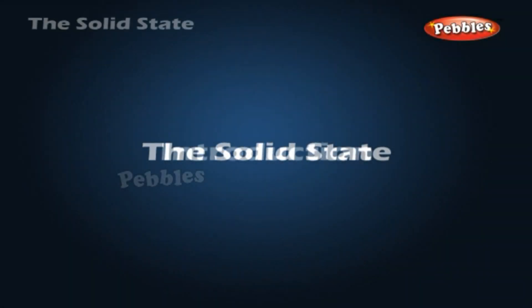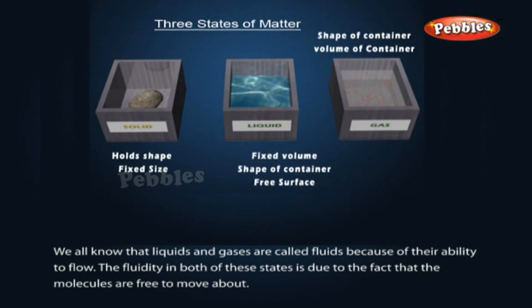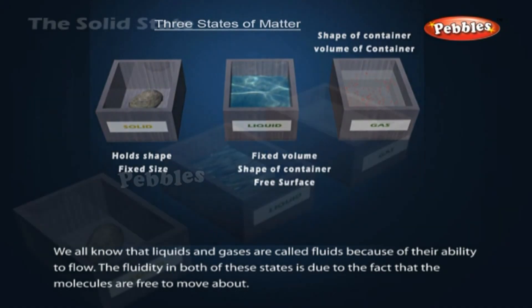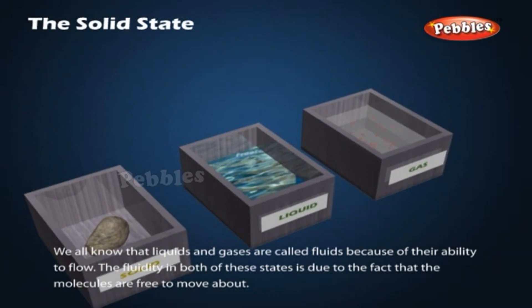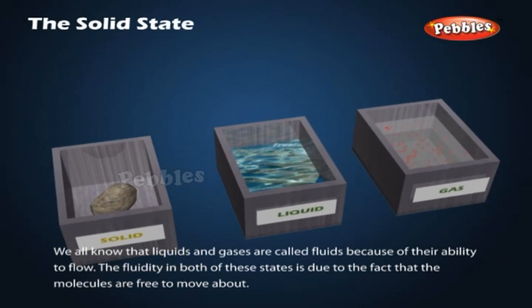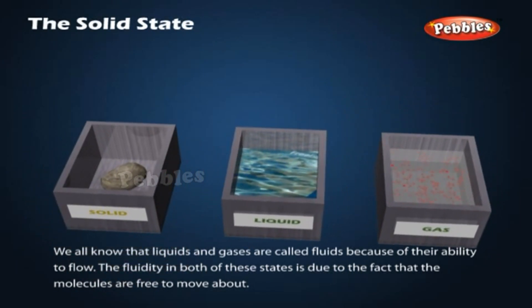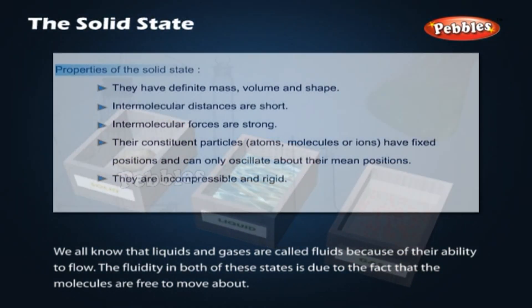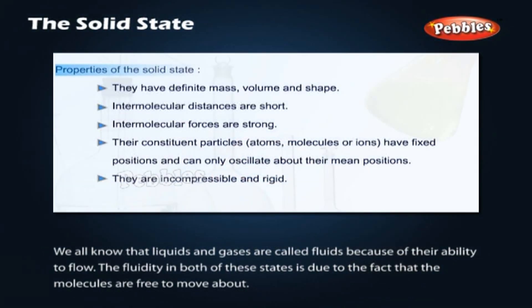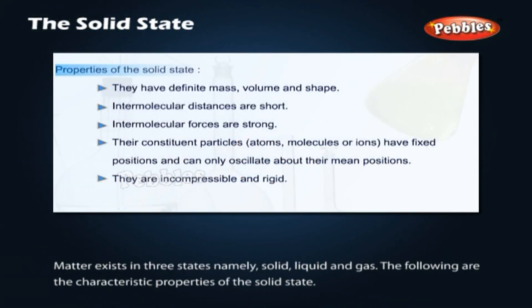The solid state — Introduction. We all know that liquids and gases are called fluids because of their ability to flow. The fluidity in both of these states is due to the fact that the molecules are free to move about. Matter exists in three states: solid, liquid, and gas. The following are the characteristic properties of the solid state.